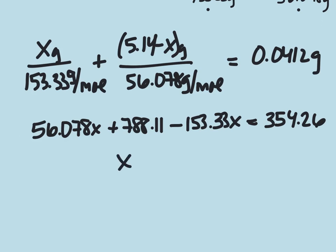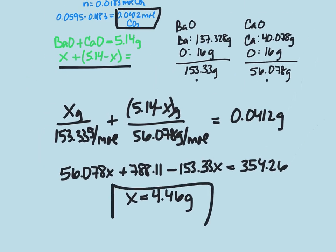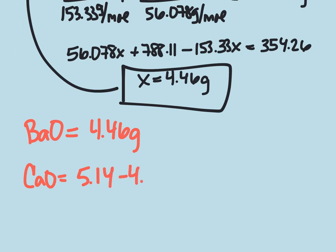Now X was our BaO. So we now know that BaO was 4.46 grams of the 5.14, which means that CaO is 5.14 minus 4.46, which equals 0.68 grams.